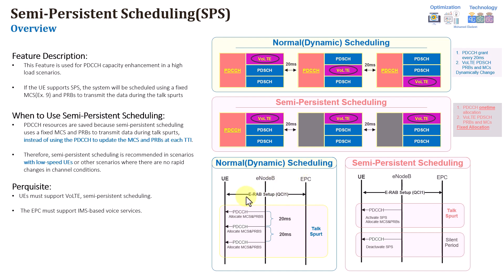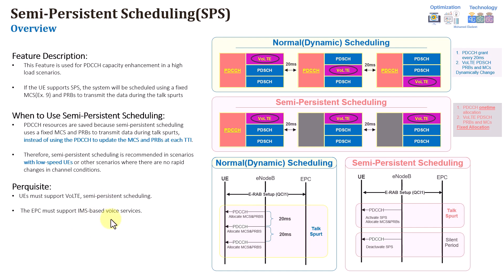Here is the scheduling information comparison. In normal scheduling, initially there is an RRC setup, DCI format 1, and then PDCCH allocation every 20 milliseconds — DCI information being sent for PDCCH grant order 1, 2, or 3. With semi-persistent scheduling, there is an RRC setup, DCI format 1, and the SPS is configured for the user. Then it is activated through only one PDCCH activation during the call. Once the call is released, the SPS is deactivated through a DCI sent from the eNB to the UE.